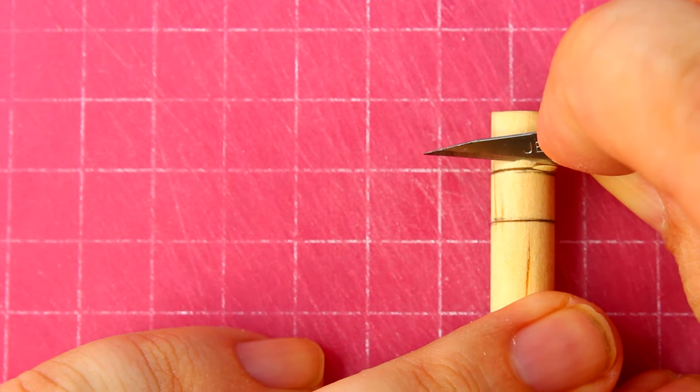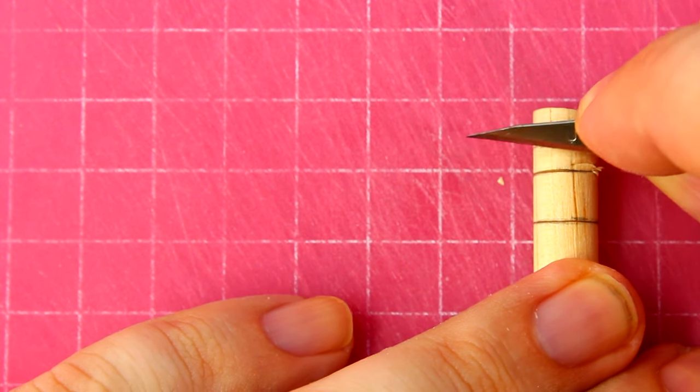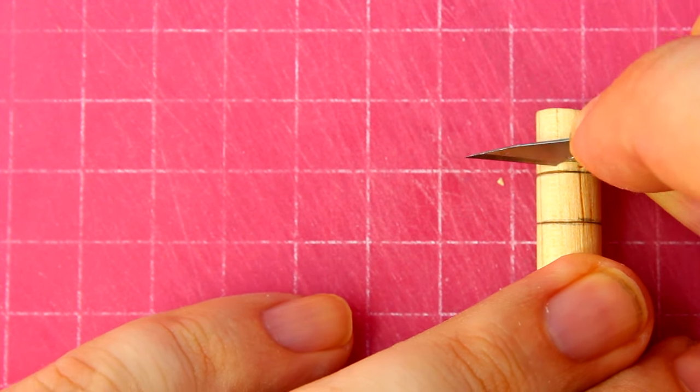The knife is much easier to control when you're making smaller cuts, which means it is less likely to slip and cut yourself or some part of the post you don't want to cut.